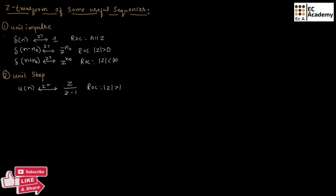If we have the function minus U of minus n minus 1, and we perform Z-transform, we again get Z divided by Z minus 1. The ROC will be magnitude of Z less than 1.